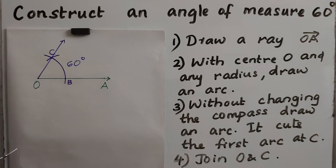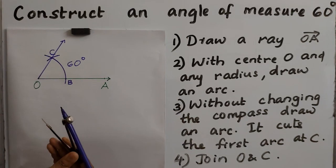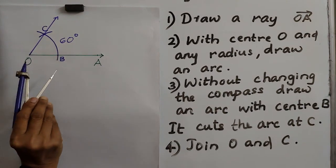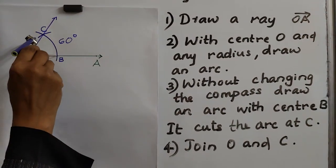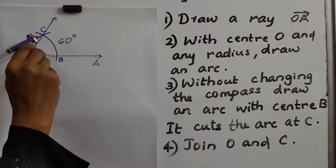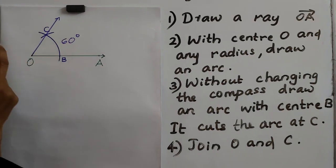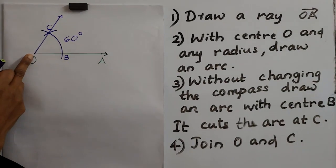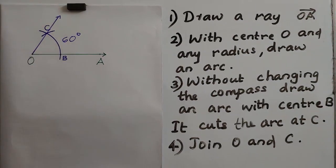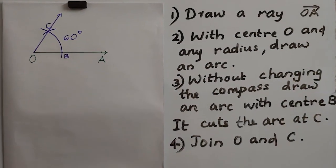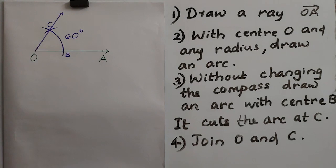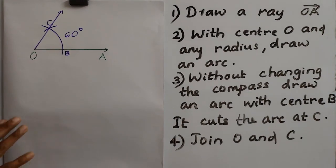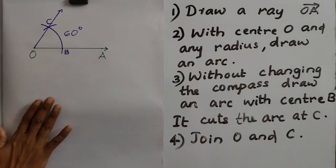Third step is without changing the compass, draw an arc with center B. It cuts the bigger arc at C. If we join O and C, we will get the angle of measure 60 degrees. It is very easy. Hope you would have understood the concept. Thank you.